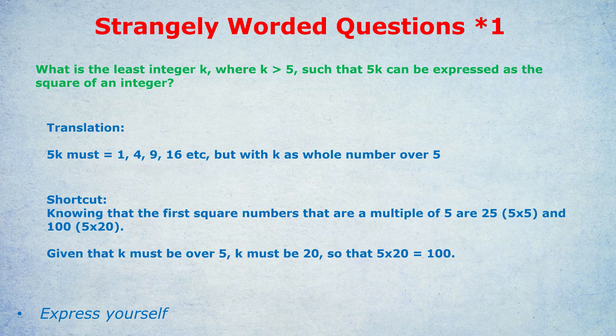So look at how far we've come. We had this really strangely worded question, but all it came down to is that we want 5k to equal a square number. That's step 1. The square number must be a multiple of 5. That's step 2.